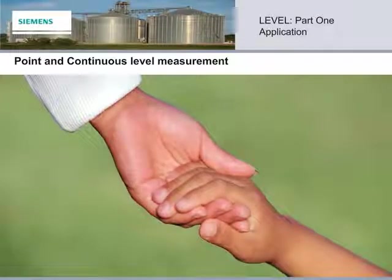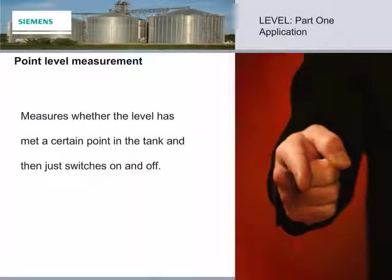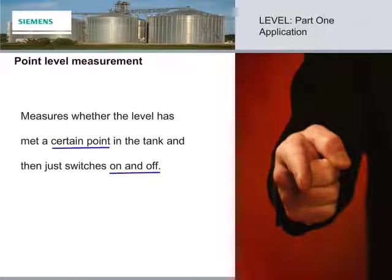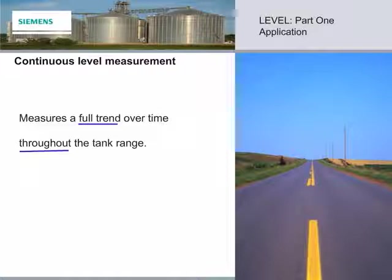There are also two types of level measurement within any application: point and continuous level. They often go together as part of a complete level solution. Where there's a requirement for one, the other provides important backup control. Point level measurement often acts as a switch or an alarm — when the level meets a certain point in the tank, it just switches on and off. Continuous level measurement measures a full trend over time and throughout the tank range, with point level backup control as an important component.